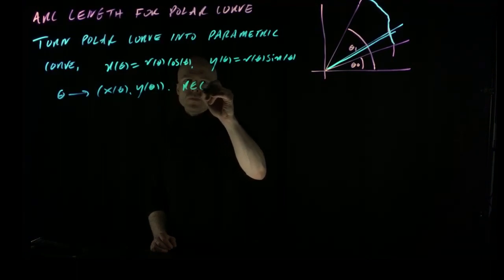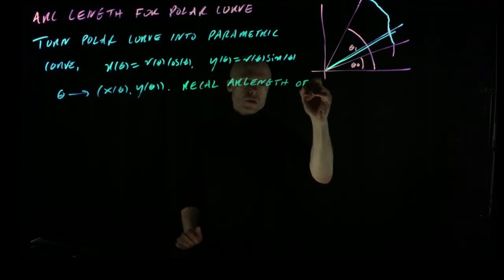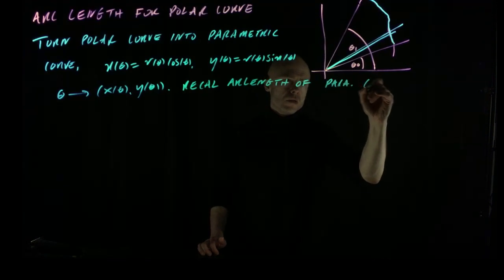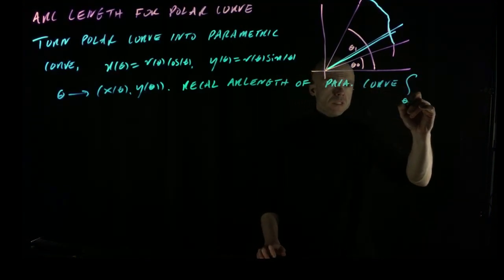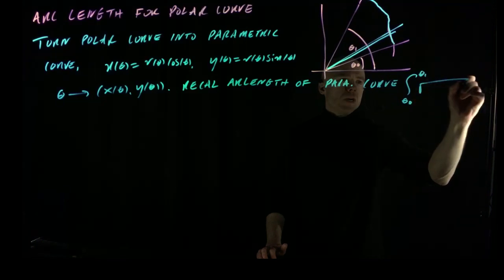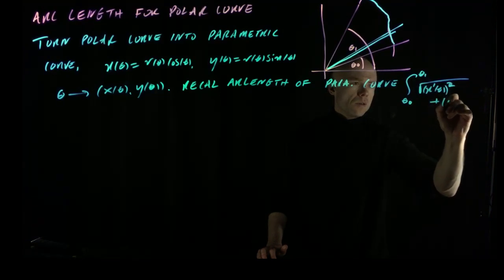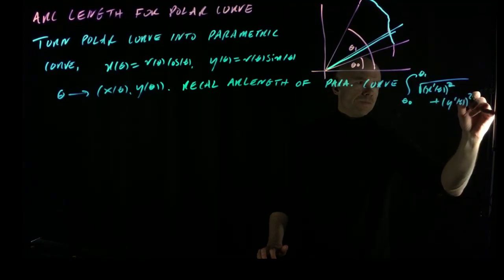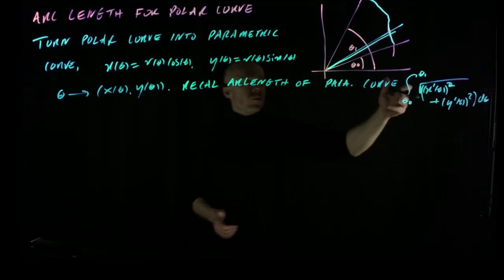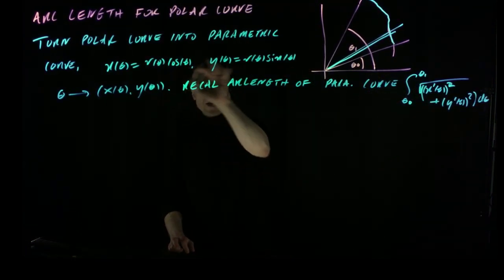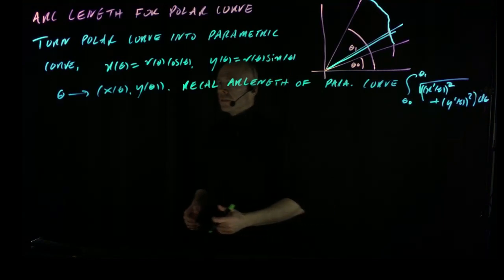Since θ → (x(θ), y(θ)) describes the same curve parametrically, we can use the known arc length formula for parametric curves: the integral from θ₀ to θ₁ of √(x′(θ)² + y′(θ)²) dθ. We can compute x′ and y′ explicitly in terms of r′ and trig functions.